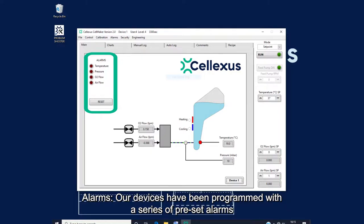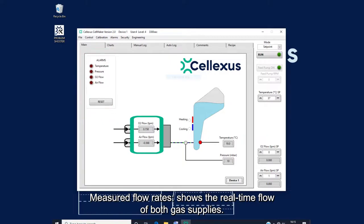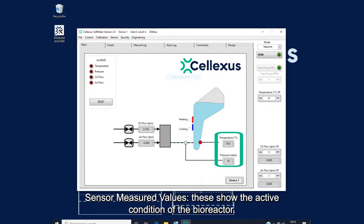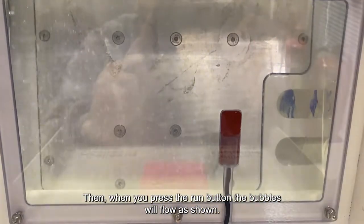Alarms. Our devices have been programmed with a series of preset alarms on the sensors fitted for the system for temperature, pressure, O2 flow and air flow. Measured flow rates, which show the real-time flow of both gas supplies. Heating cooling indicator shows how the Peltier units are working at that moment. Sensor measured values. These show the active condition of the bioreactor, and when the run button is pressed, the bubbles will flow as shown.